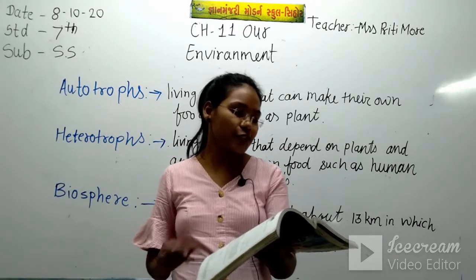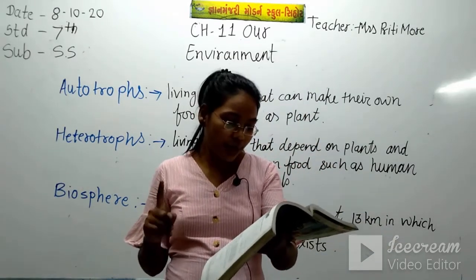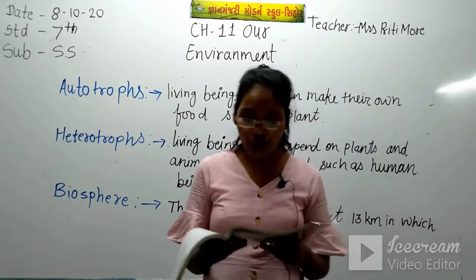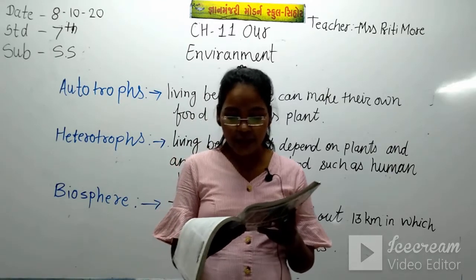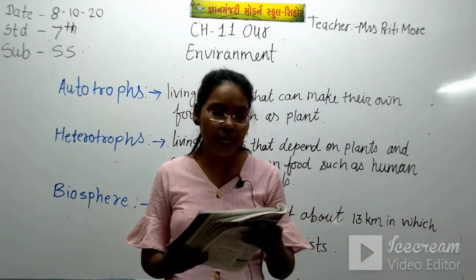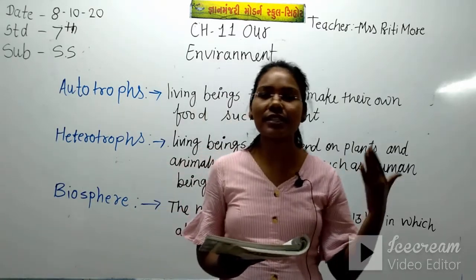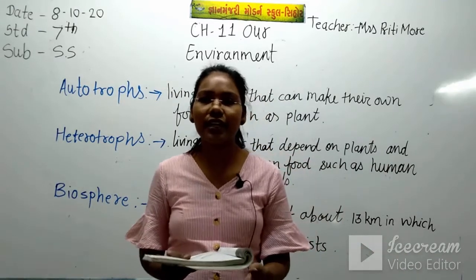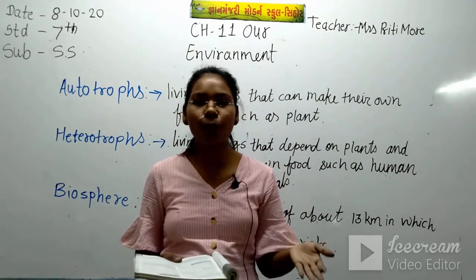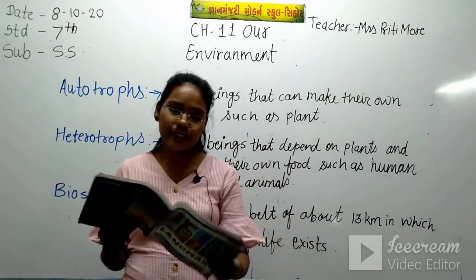Here we have completed chapter 11 - Our Environment. In this chapter we have seen: the natural environment, biotic and abiotic physical components. In biotic components we saw producers, autotrophs, consumers, and heterotrophs. We also saw the interaction between the components and the environment - how organisms interact with their environment and happily spend their life there. We also saw the human environment - how global warming increased and how people's demands increased.